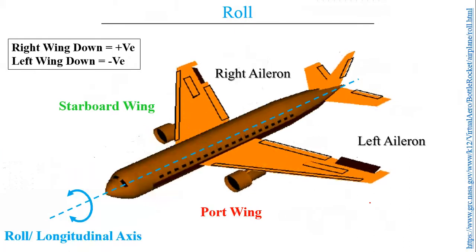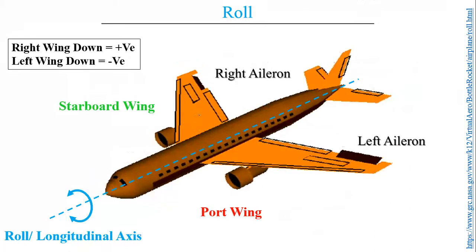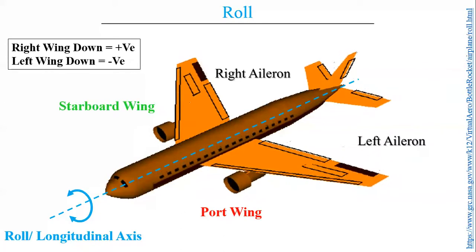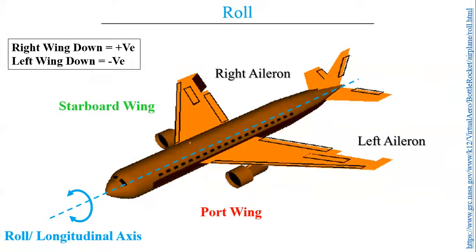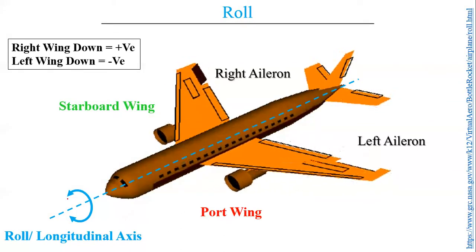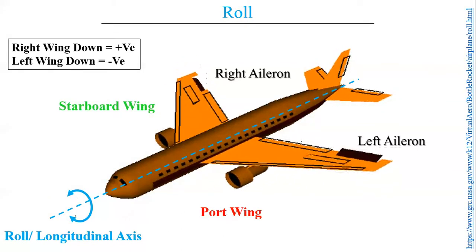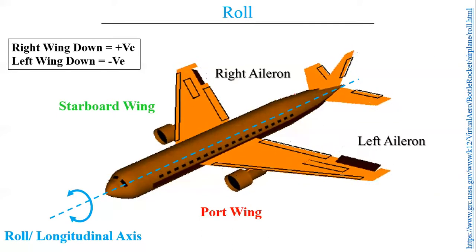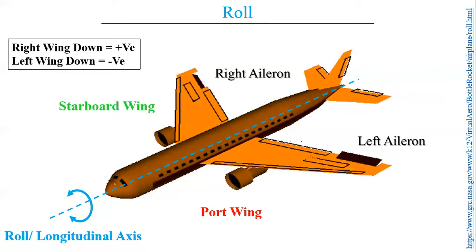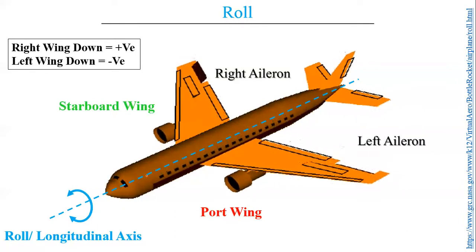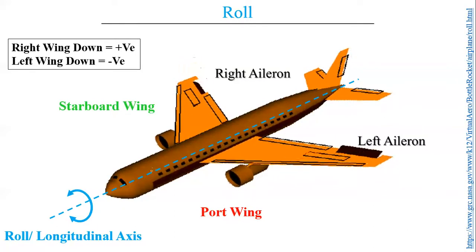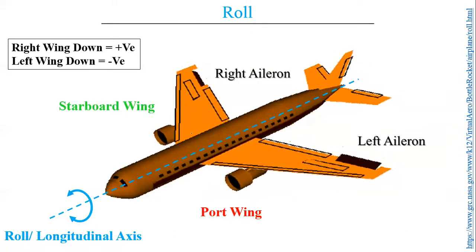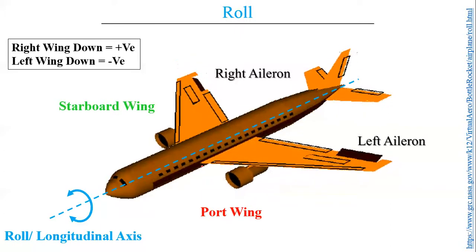Now we are focusing on roll. Here is a visualization or animation of roll — how an aircraft performs a roll. We can see the roll or longitudinal axis spanning along the fuselage length, and the aircraft is rolling in both directions.